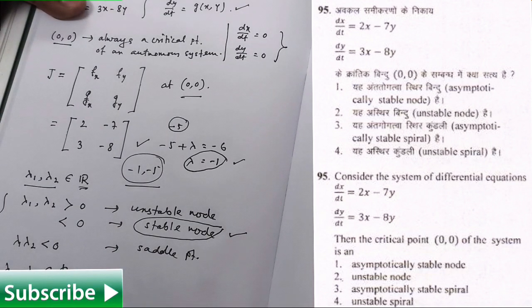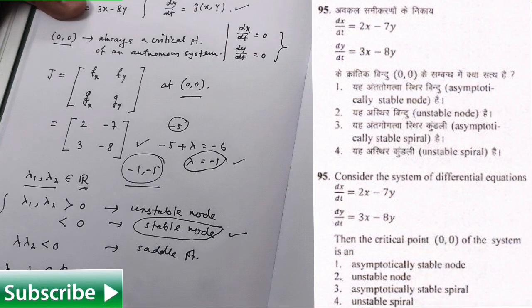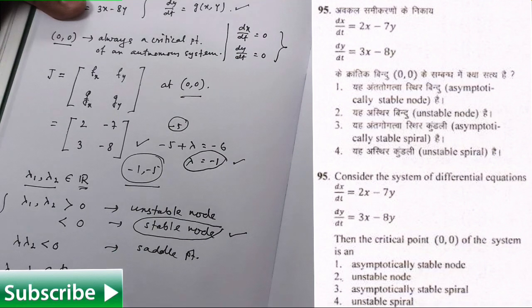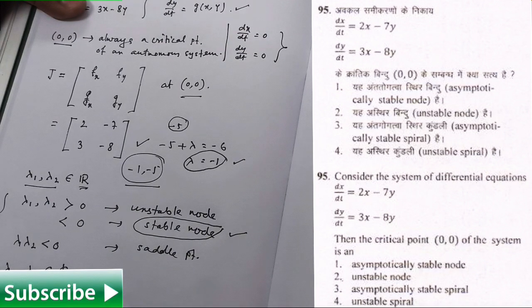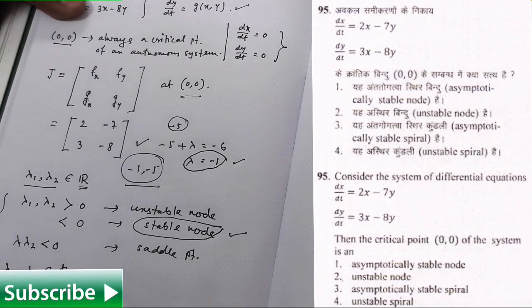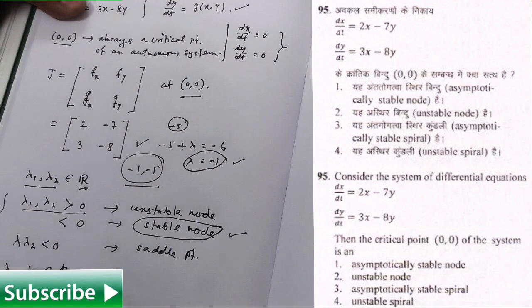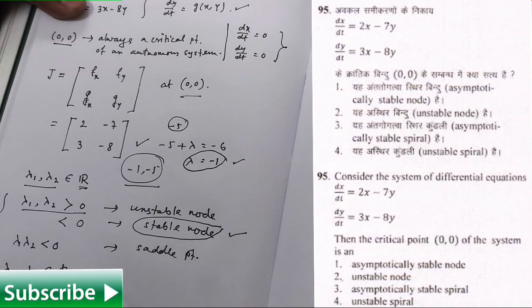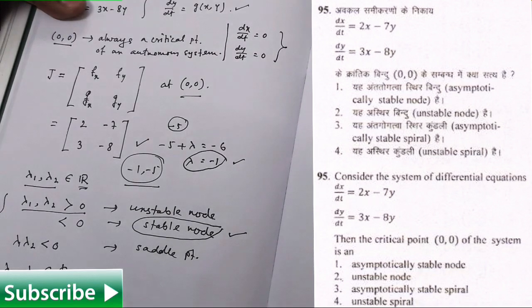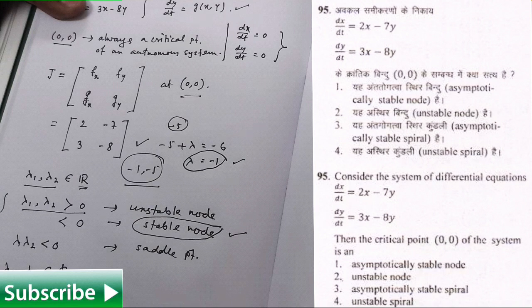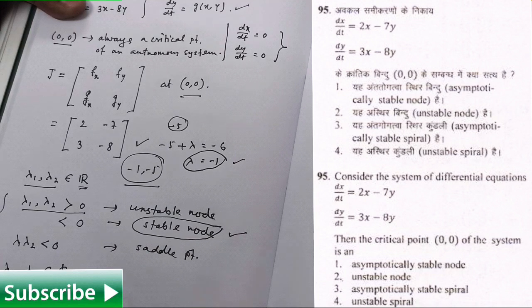In our option, look at the options carefully, only first option says asymptotically stable node. So it is going to be correct one and rest of the three options look at unstable node, obviously false, because for unstable you need to have both of them greater than 0. Third says stable spiral. It will be not because we have it is node, spiral is a different case. So third option is also false although it is saying stable part but it is spiral not node. And the fourth option says unstable spiral, obviously it will be false. So first option is your correct one.